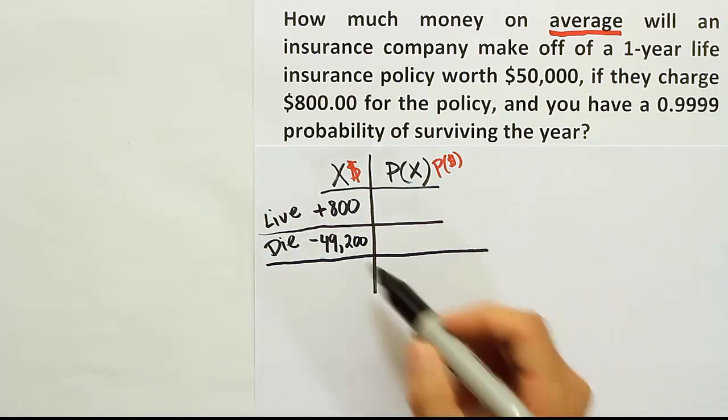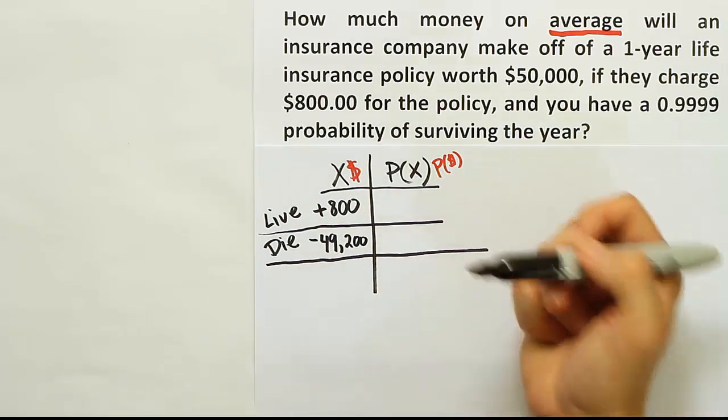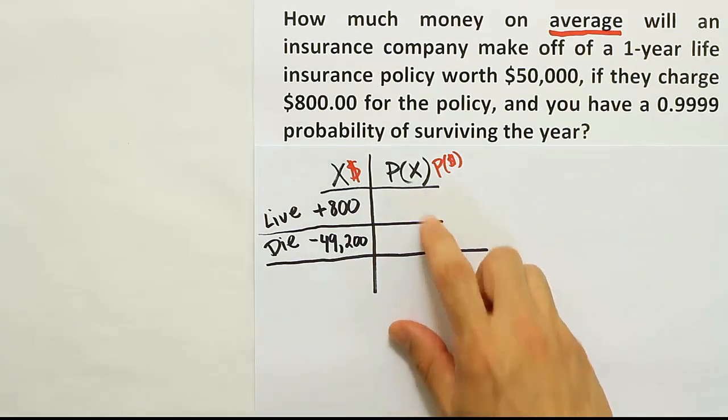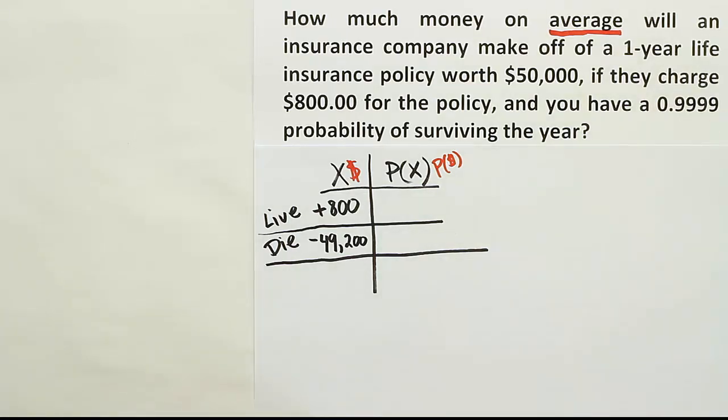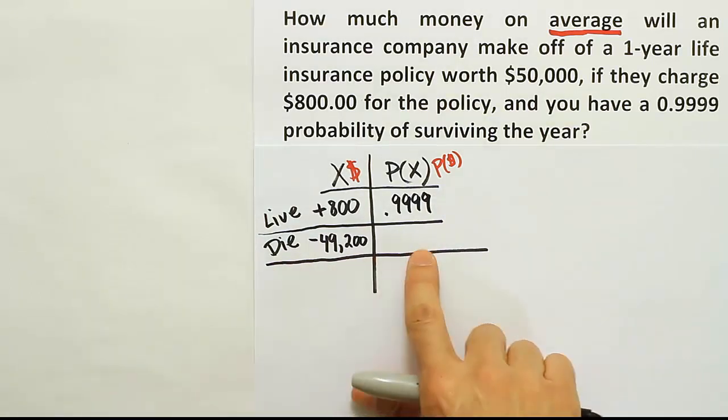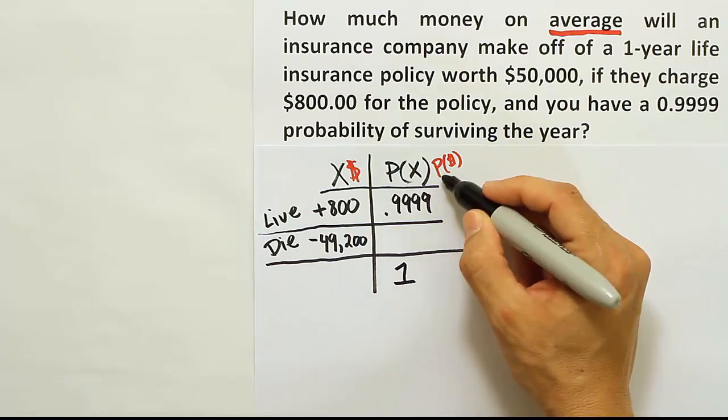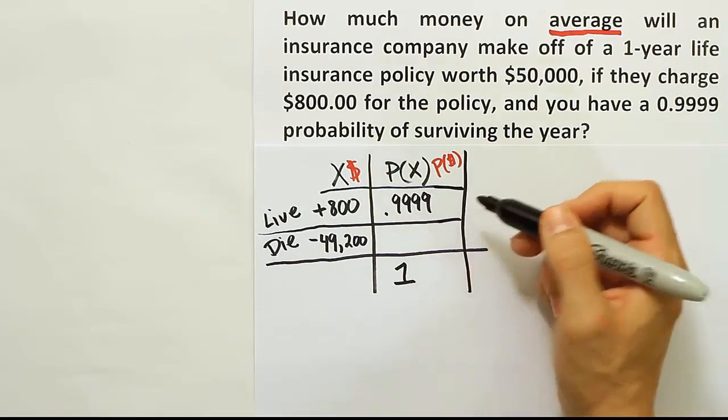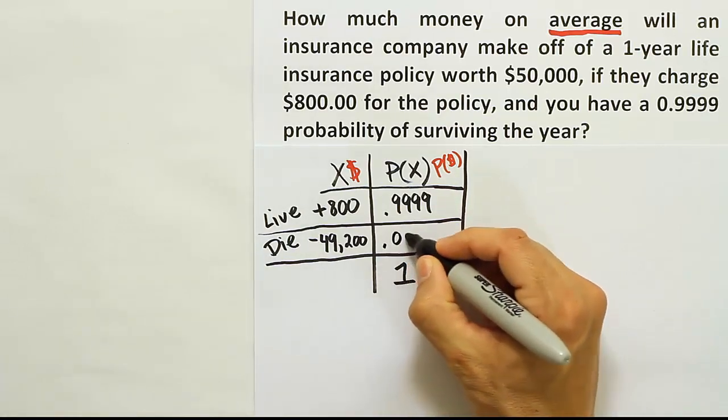Okay, so now you have the two controlling events and you have the dollar amounts that are associated with that. Should you live, the company makes $800. Should you die, the company loses $49,200. Alright, now what's the probability of these two events? Well, the probability that you live the year is given to us. You're not expected to know that. It's provided. And that number is 0.9999. Now the probability you die has to come from this number, sort of, right? Because we know that the two probabilities together would add up to 1, right? The total probability here, if you sum this column, that column would have to add up to 1. We know that because essentially it's all the possibilities. Either you're alive at the end of the year or you're dead. So if you take 1 and subtract off this number, you'll be left with the probability that you die. And that probability would, of course, be 0.001.